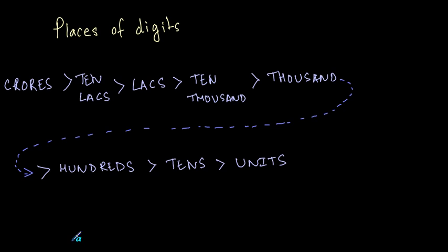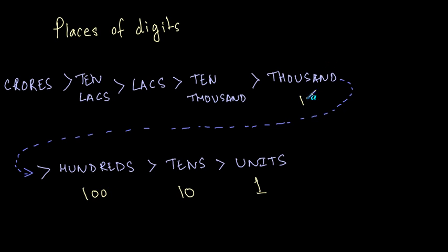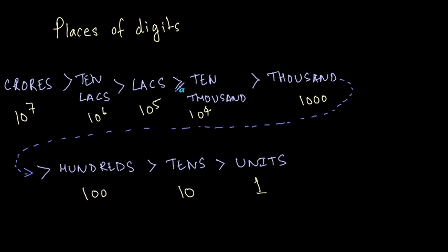When you combine these digits and form a number, these digits have places in a number. The value of the units place is 1, then the 10s place, 100s place, 1000s place, 10,000s place, then lakhs which is 10 raised to 5, 10 lakhs which is 10 raised to 6, and crores which is 10 raised to 7. These places are the powers of 10: units is 10 raised to 0, tens is 10 raised to 1, hundreds is 10 raised to 2, and so on up to 10 raised to 7.